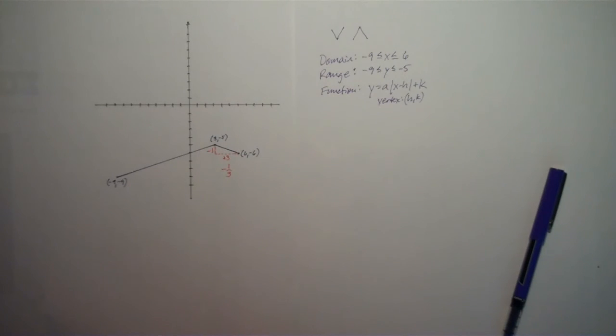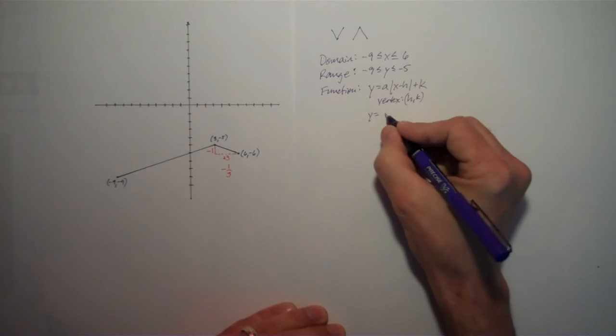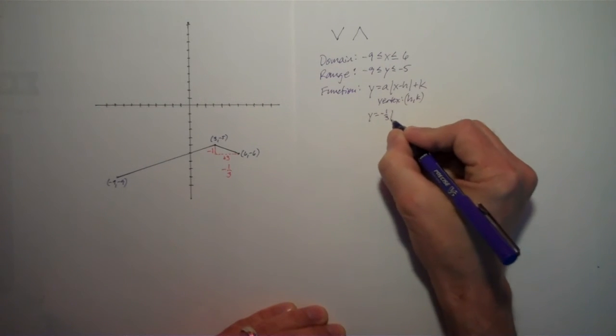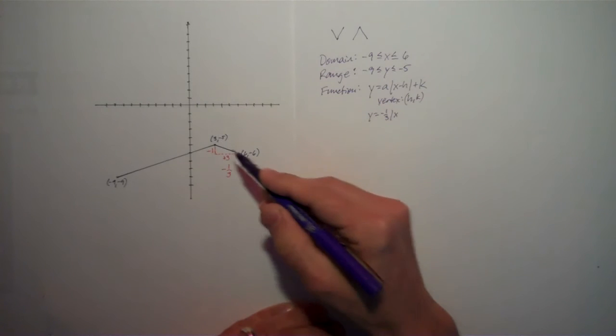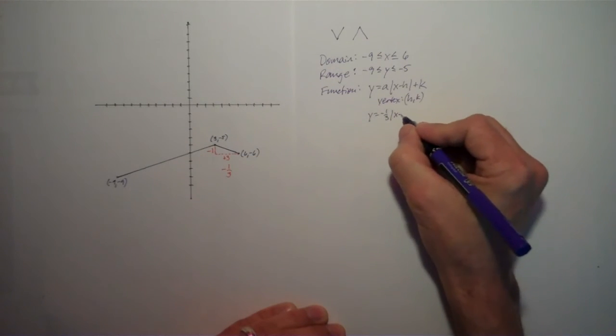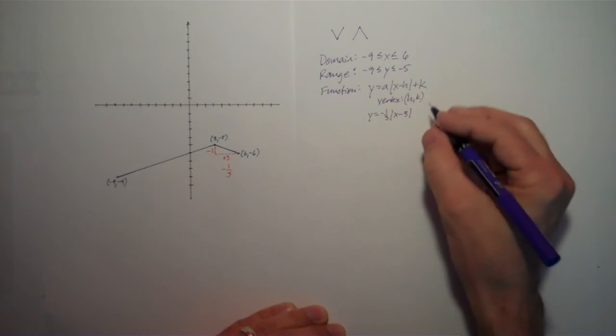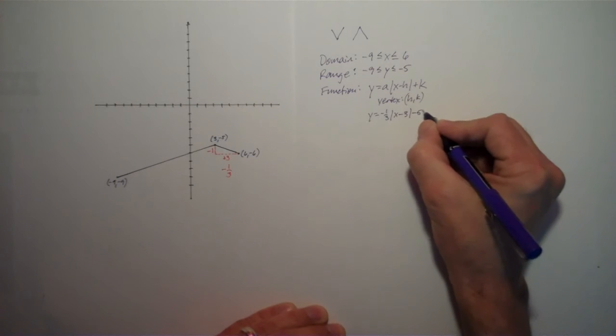That gives us the whole thing. Because now we have y equals negative 1 third, that's a, x minus h, the x-coordinate of the vertex. So that's x minus 3 plus negative 5. I'll just write that as minus 5.